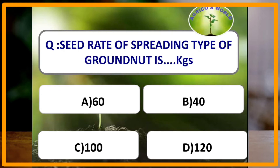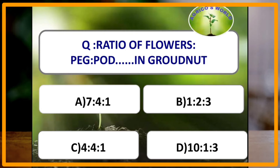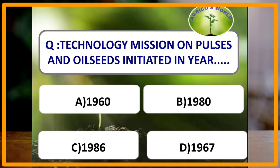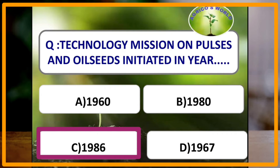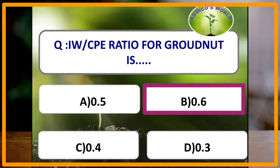Seed rate of spreading type of groundnut is how many kgs? Seed rate of spreading type of groundnut is 60 kgs. Ratio of flowers to peg to pod in groundnut is? The answer is 7:4:1. Technology Mission on pulses and oilseeds was initiated in which year? The answer is 1986 and it aims at increase in yield of oilseeds and pulses. IW by CPE ratio for groundnut is around 0.6.